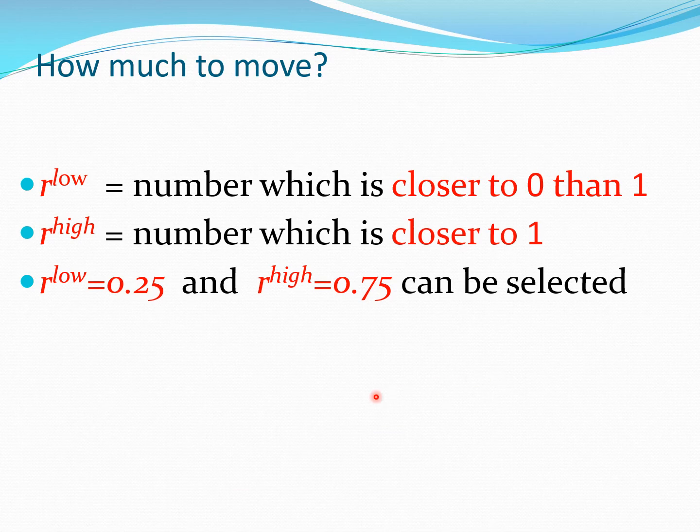So the question now comes how much to move and again typically r low would be a number which is closer to 0 than 1 so we can select a number such as 0.25. r high would be a number which is closer to 1 so we could select a number such as 0.75. So essentially these would guide the trust region method in terms of the reliability value r.